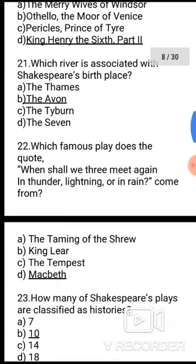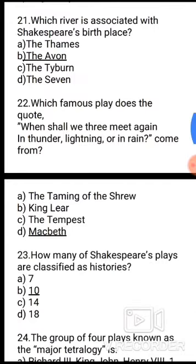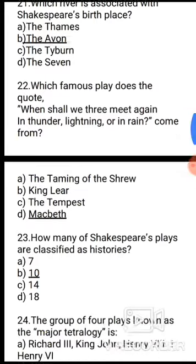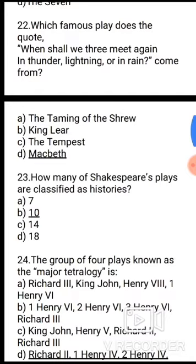Question 22: Which famous play does the quote 'When shall we three meet again in thunder, lightning, or in rain' come from? Options: A. The Taming of the Shrew, B. King Lear, C. The Tempest, D. Macbeth. The correct answer is option D, Macbeth.